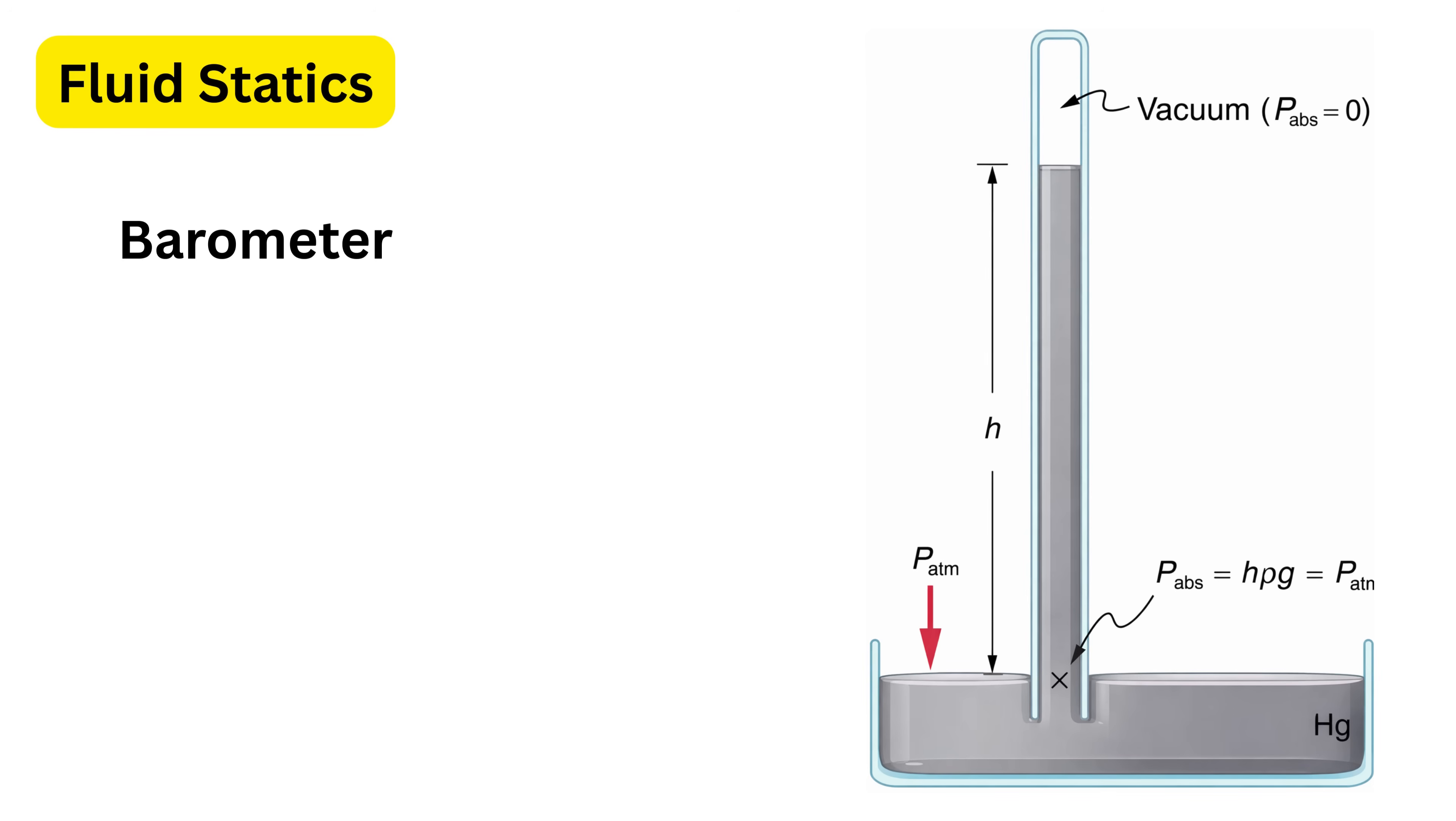After some time, you will notice that the mercury level inside the tube falls slightly and then becomes steady at a certain height, and this height is a direct measure of the atmospheric pressure acting on the liquid in the container.